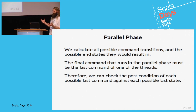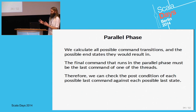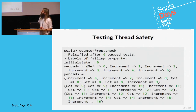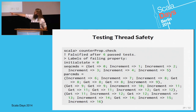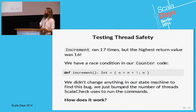We take all our computed end states and match them with the post-conditions of all possible last commands. If we find a match, then we know it was possible to end up with that state if commands ran in that order. But in this test, the end state ends up as 16, and there is no possible way to fulfill the post-conditions for that value.